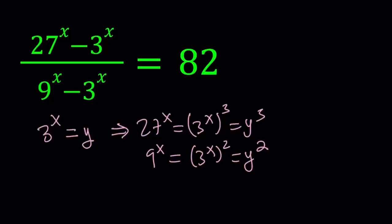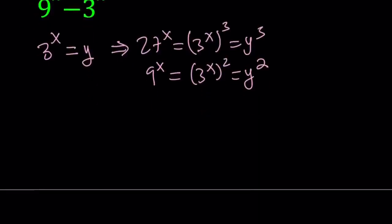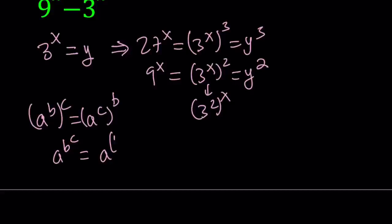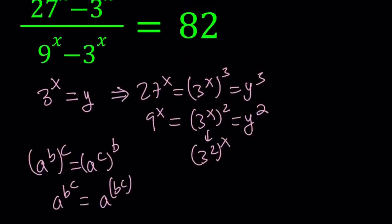Now the reason why we have 9 to the x equals y squared is because this is the same thing as 3 to the second to the power x. So when you are using the power of a power property, you have something like a to the power b to the power c, it is the same thing as a to the power bc. Let's go ahead and make all the replacements.